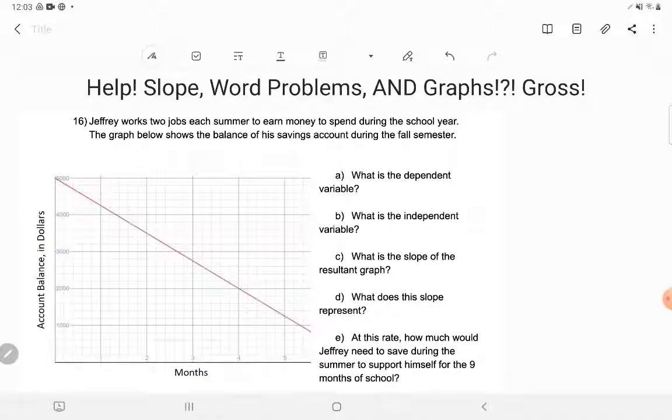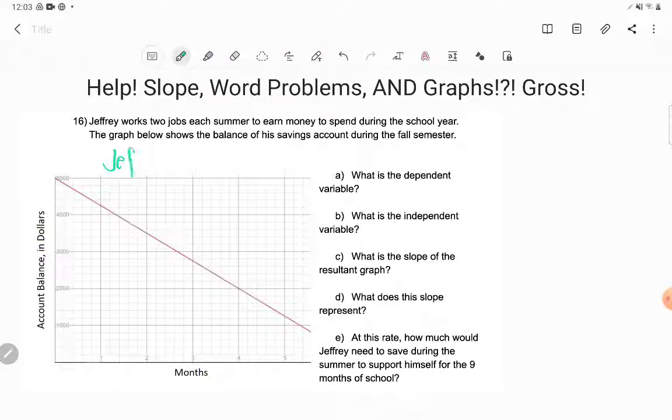It says Jeffrey works two jobs each summer to earn money to spend during the school year. The graph below shows the balance of his savings account during the fall semester. So here I have a graph. It has something to do with Jeffrey's savings account. I wonder why this thing doesn't have a title. Well, we can title it. We know this is Jeffrey's savings account.